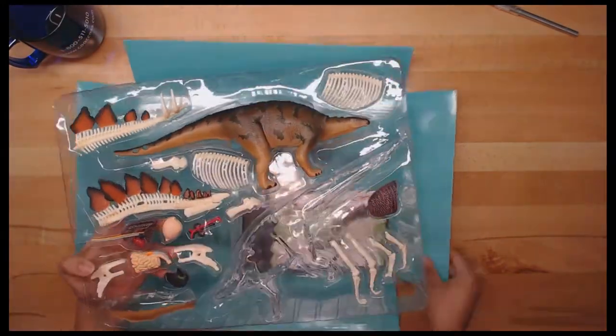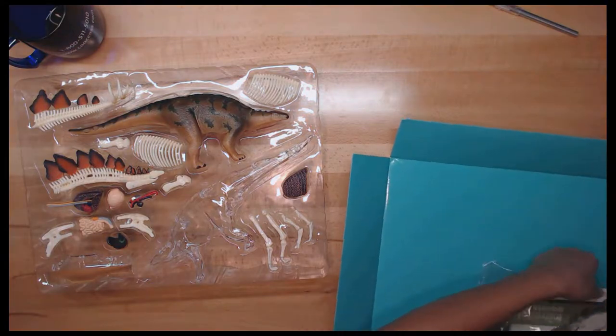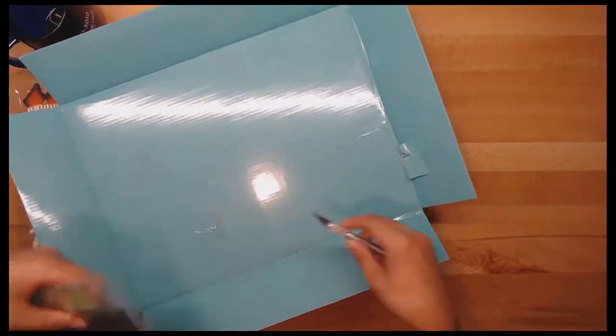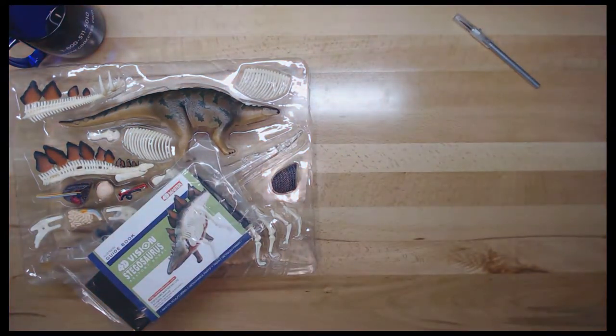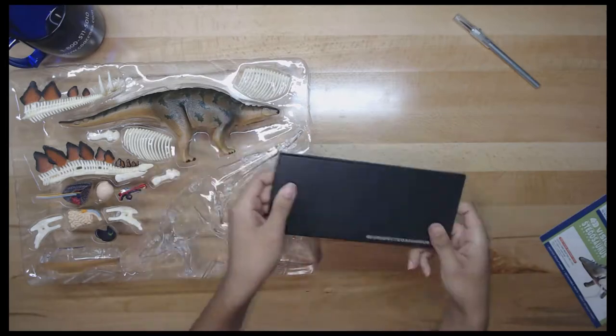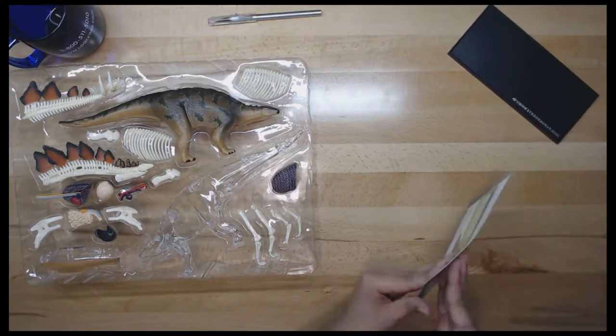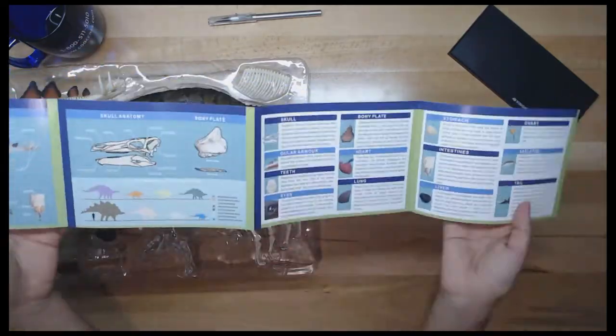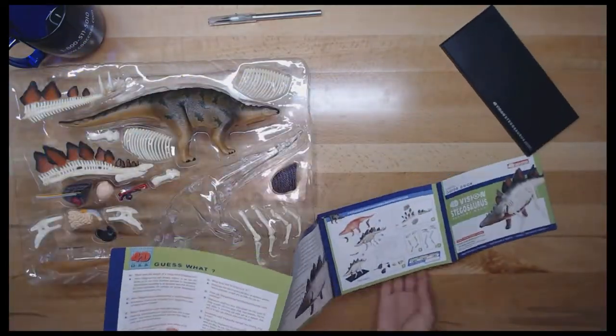The name Stegosaurus means roof lizard or covered lizard in reference to its bony plates which is the best known member of the Stegosauridae. This extinct genus of herbivorous dinosaur lived during the late Cretaceous period around 155 to 150 million years ago in the area which is now called western North America.